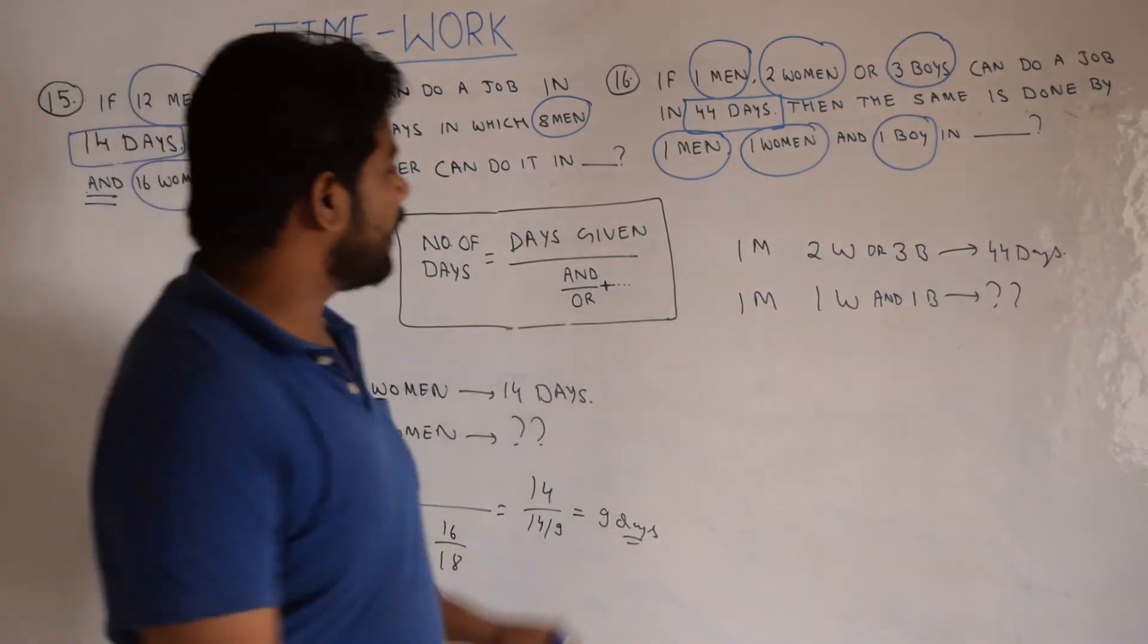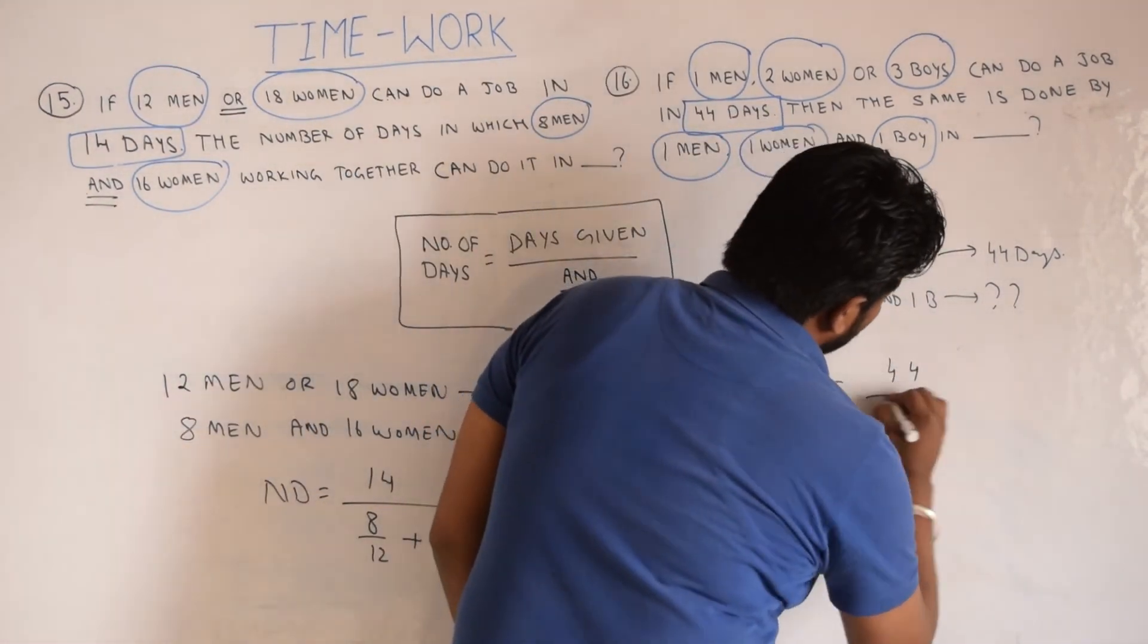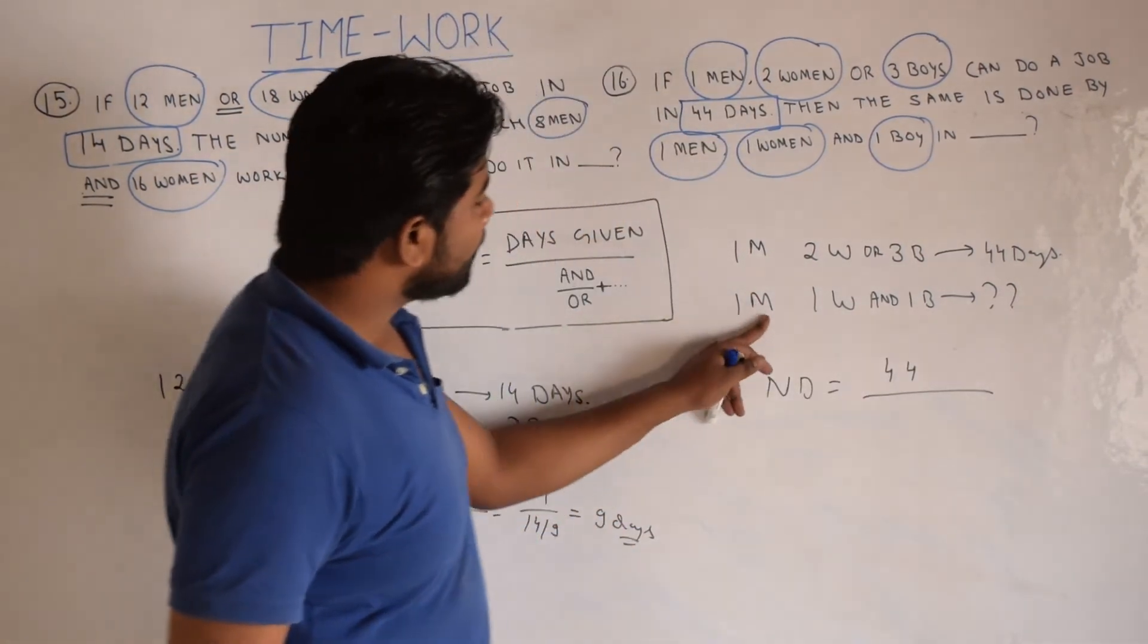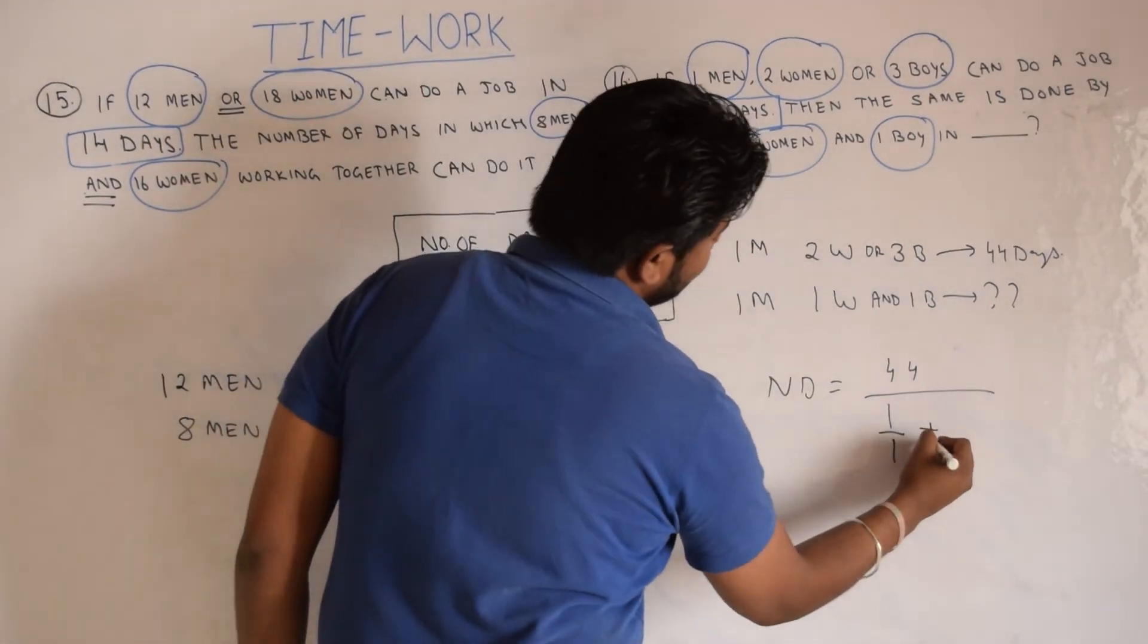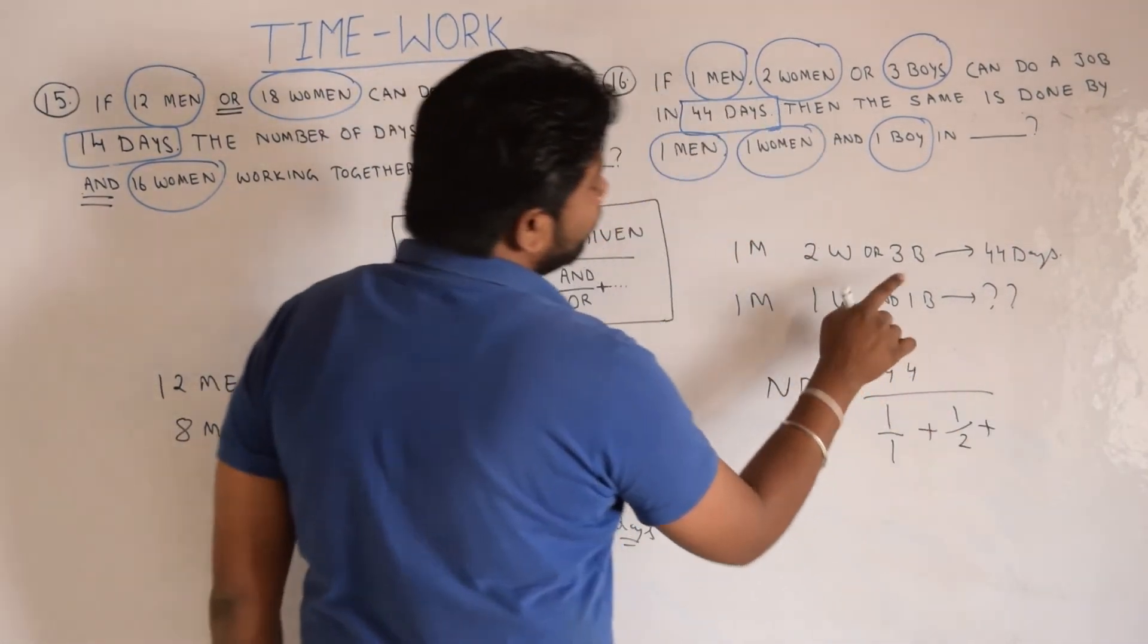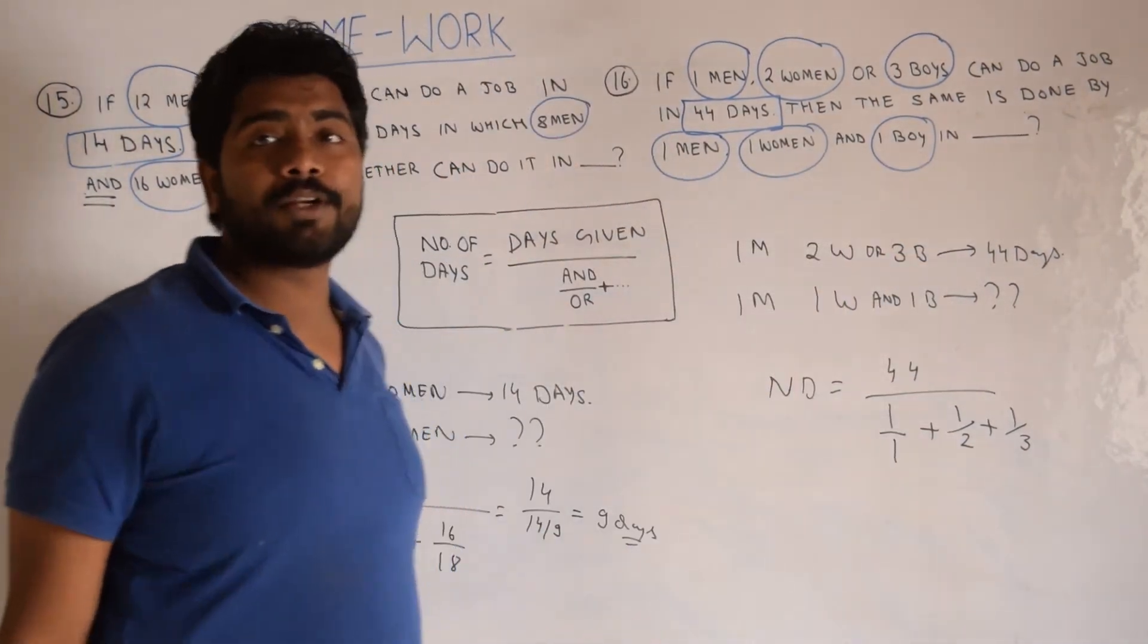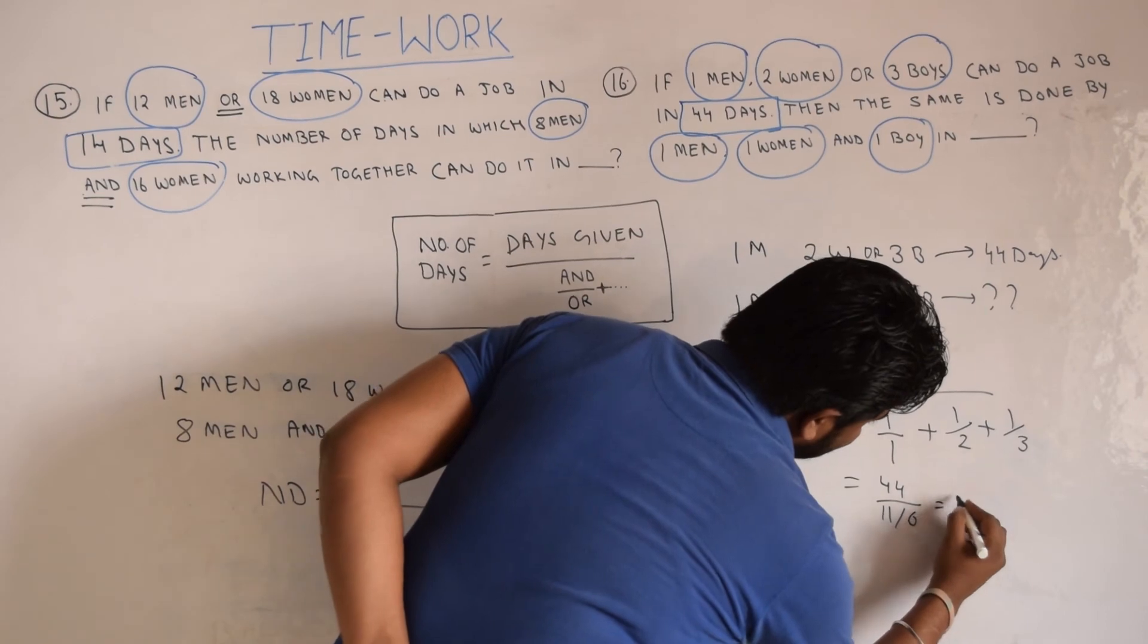Number of days, see the formula: number of days is equal to days given, which is 44, divided by AND upon OR. First for men, then for women, and then the third entity is boys, so we'll add that also. For men, AND has 1 divided by OR has 1, plus for women AND has 1 divided by OR has 2, plus for boys AND has 1 divided by OR has 3, that is 1 by 3. This is the number of days in which they are going to complete the work. If you solve this, it will be 44 divided by 11 by 6, that is 24 days.